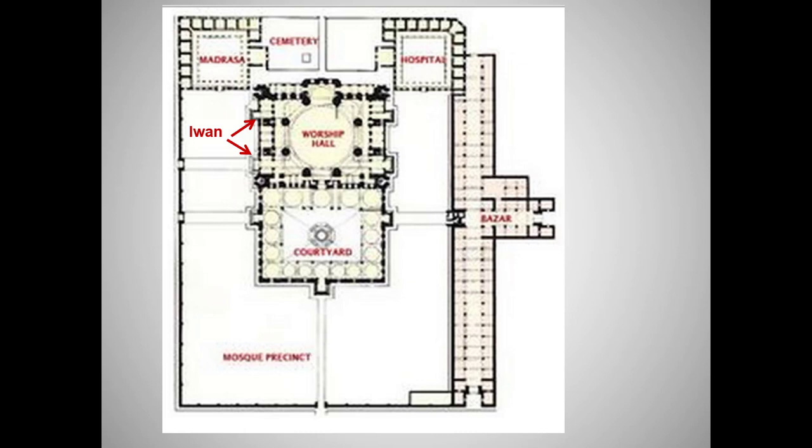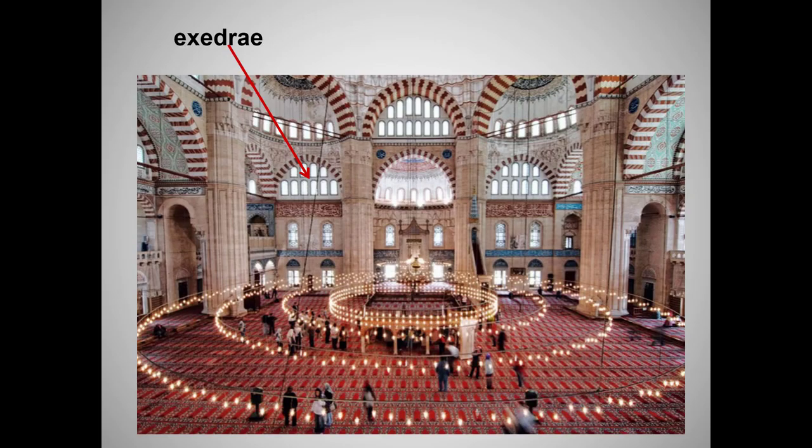Note that the worship hall is surrounded by outbuildings: a madrasa or school, a cemetery, a dormitory for students, and a covered colonnaded market. The complex also included a hospital and a soup kitchen. The mosque itself is octagonal with a dome contained within a rectangle that has four iwans — rectangular recessed openings into the corridor. Note also the large courtyard with a fountain for ritual washing. This is an entire religious community, the center of communal life as well as religious ritual in the city. Here's a more panoramic view of the huge prayer hall, which shows the half dome surrounded by the central dome. The areas beneath the half domes are called exedrae — semicircular recesses.